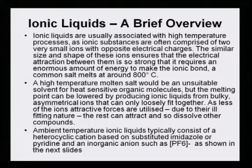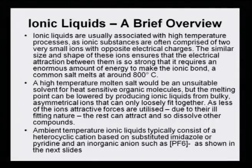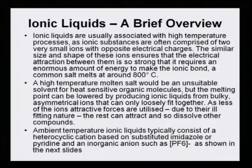A common salt melts at about 800 degrees centigrade. These ionic liquids will be comprising of cation and anion which are of opposite charge, very small, but they form the ionic bond because of the electrostatic attraction. A high temperature molten salt would be an unsuitable solvent for heat-sensitive organic molecules. But the melting point can be lowered by producing ionic liquids from bulky asymmetrical ions that can only loosely fit together.